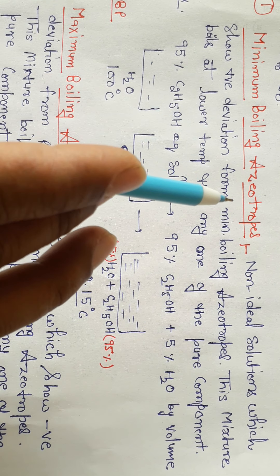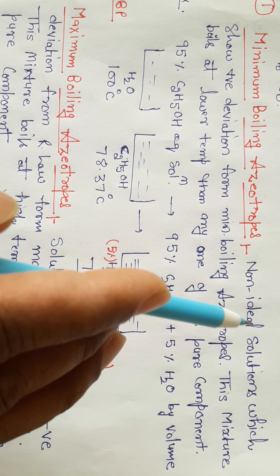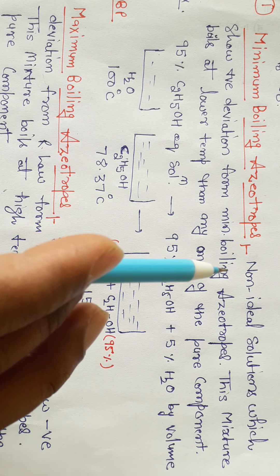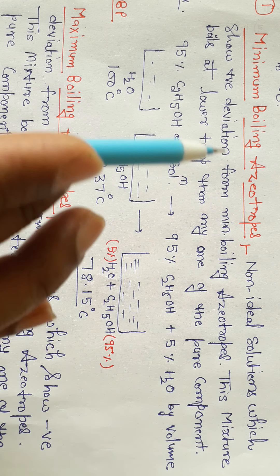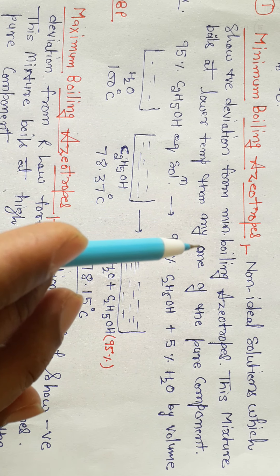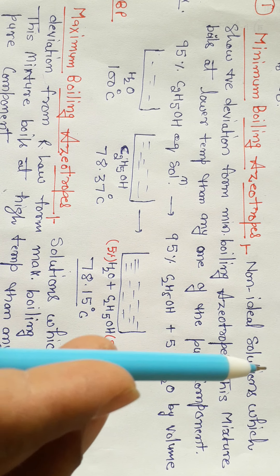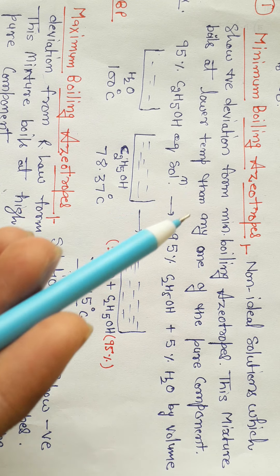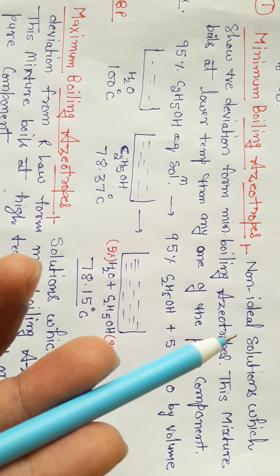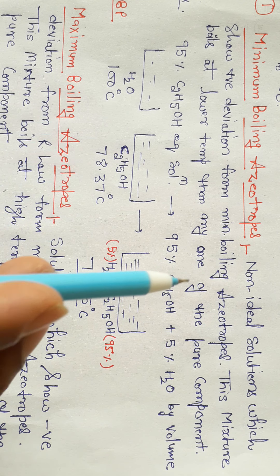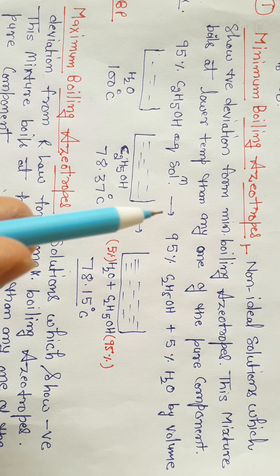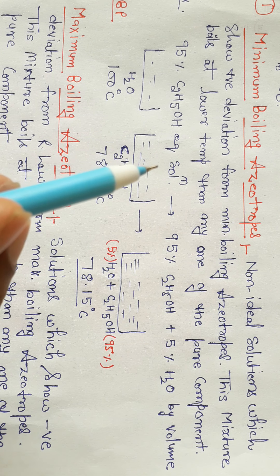First, we will discuss minimum boiling azeotropes. Non-ideal solutions which show positive deviation from Raoult's law form minimum boiling azeotropes. These mixtures boil at a lower temperature than any one of the pure components, so the boiling point of the solution will be less than any one of the individual boiling points.